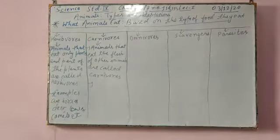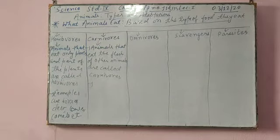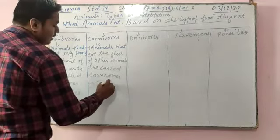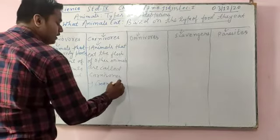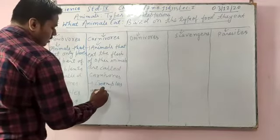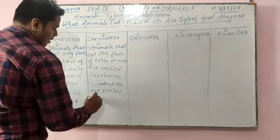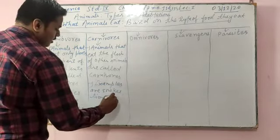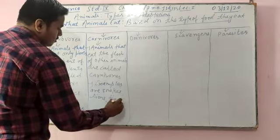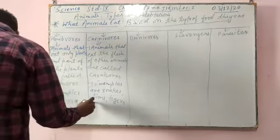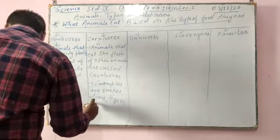In carnivores, they hunt, they kill, and then they eat the flesh. Examples include snakes, lions, and tigers — they hunt, kill, and eat the flesh of other animals.